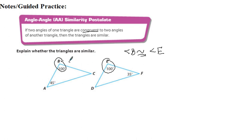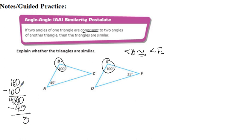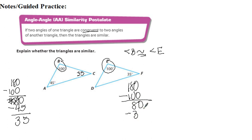We know that all three angles of a triangle sum to 180. So if I have 100 and 45, I'll do 180 minus 100 minus 45. We get 35. Just to make sure, I'm going to check it: 180 minus 35 minus 100 gives 45. I promise I'll write a 7 this time.